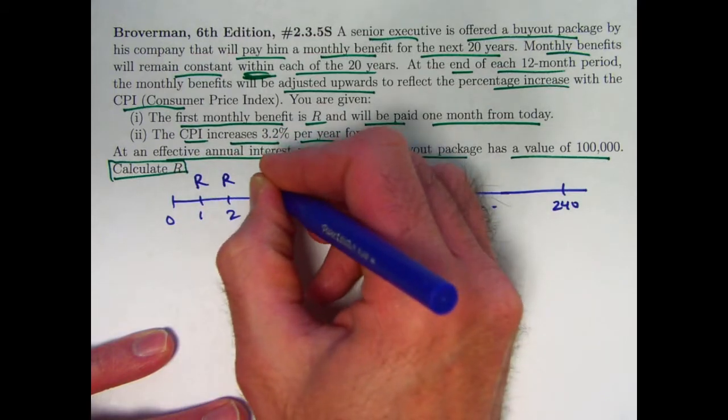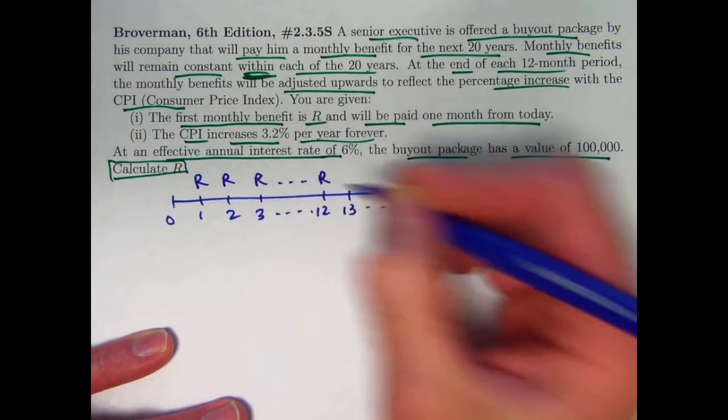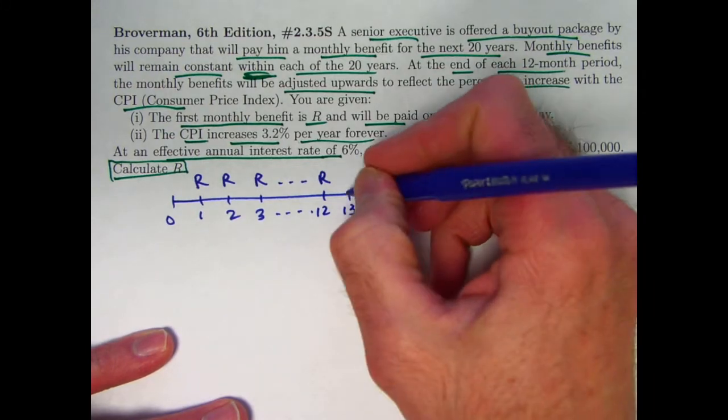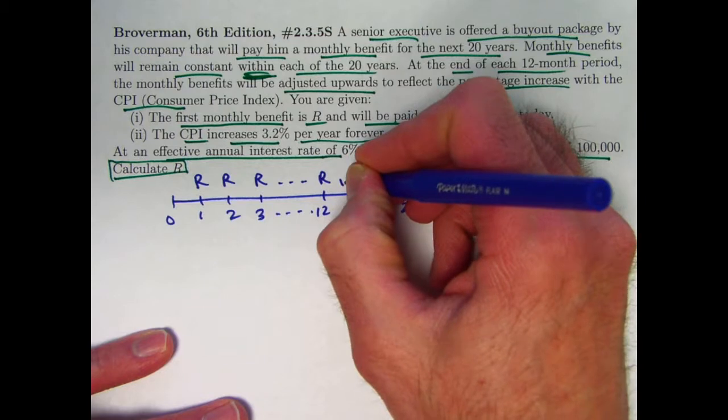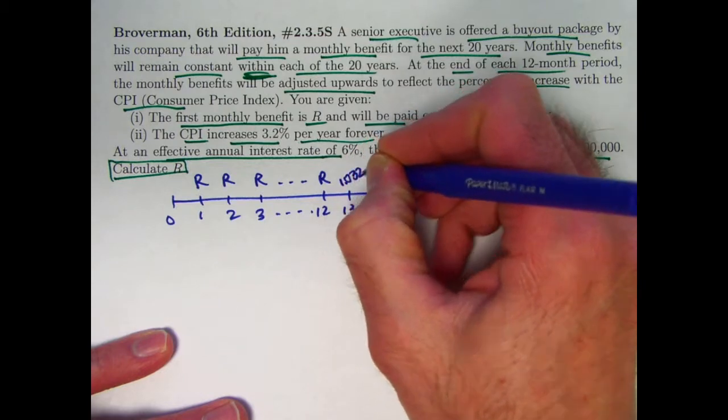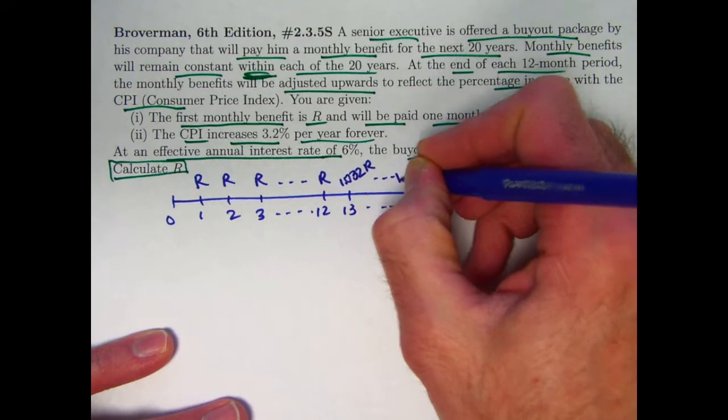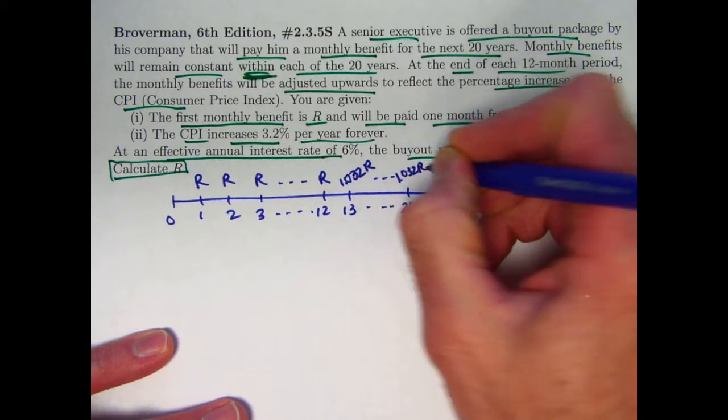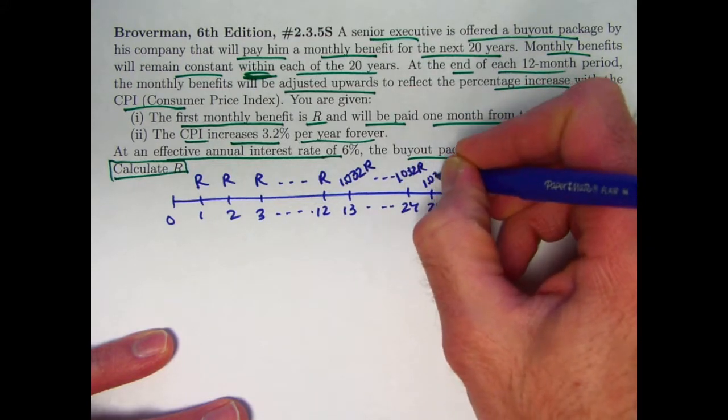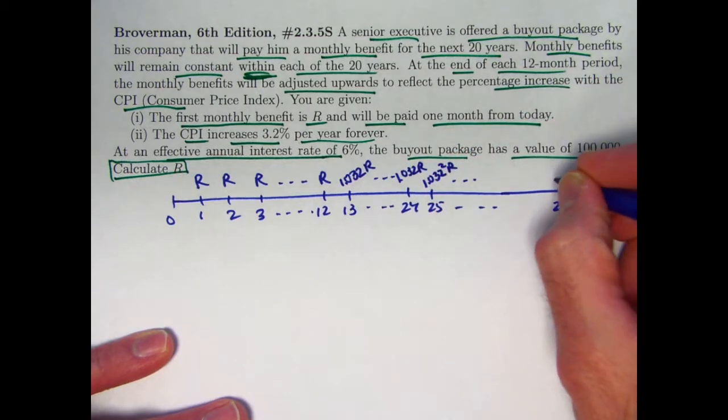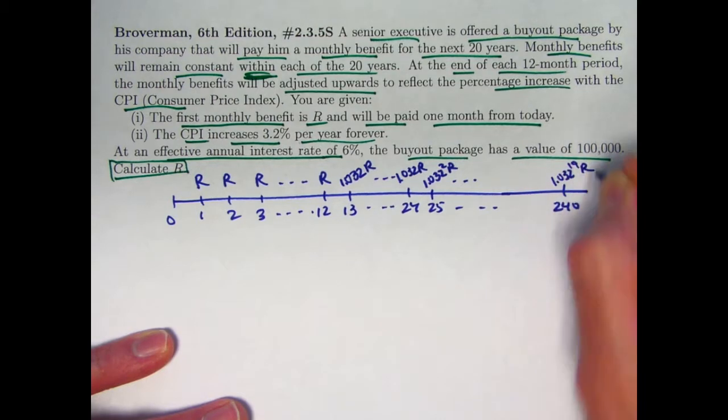Payment of R at the end of each month for the first year, then the value of the payment goes up, the nominal value, by 3.2% to be indexed to the CPI, 1.032 times R for the second year, and then 1.032 squared times R for the third year. The last year, the 20th year, it's going to be 1.032 to the 19th power times R.